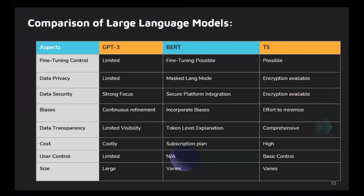Fine-tuning refers to who has control over the fine-tuning process after the LLM. If the fine-tuning is done by the LLM provider, then the provider has full control over the data used to fine-tune the model. If the fine-tuning is done by the user, then the user has control over the data used. Data encryption refers to whether the data used to train and fine-tune the LLM is in encrypted form. If the data is encrypted, it is more difficult for unauthorized individuals to access and use that data.